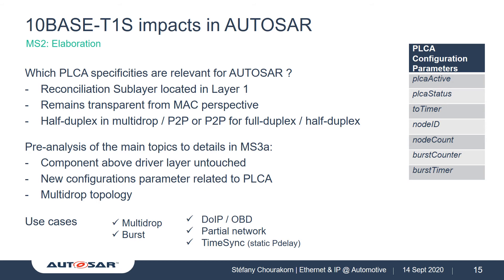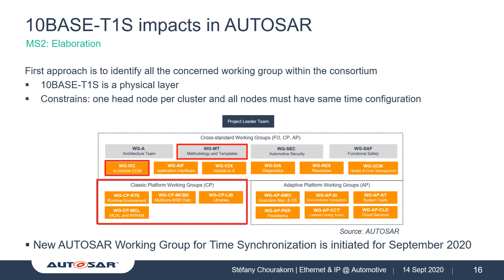Our use case needs to support multidrop topology and burst configuration, but we also want to take into account already existing features supported by AUTOSAR, like Diagnostics over IP, power networking, and time synchronization. After gathering all of this information, we need to identify which working groups are concerned. Regarding 10BaseT1S, the affected working groups are the in-vehicle communication from the Classic Platform, the methodology working group — also affected for introducing multidrop — and due to the fact that 10BaseT1S impacts only the low level, the Adaptive Platform, which only specifies functional clusters, will not be affected. This overview will soon be updated due to the creation of a new working group dedicated to time synchronization.